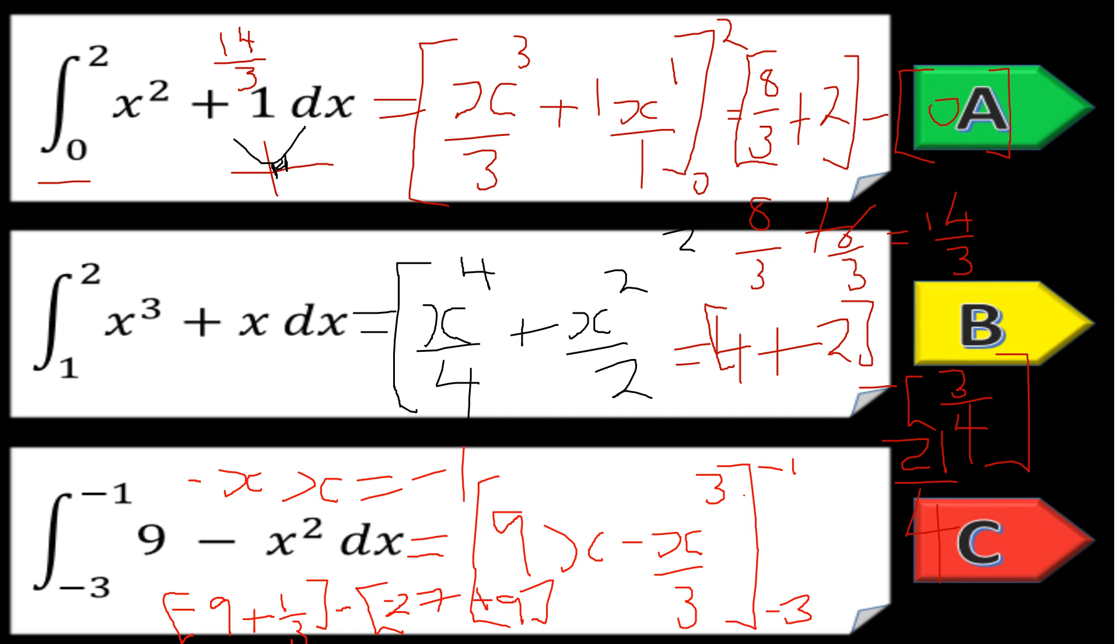If we plug this into our calculator, we've got minus nine plus one third, then we're going to have minus minus sixteen, so plus sixteen. That'll be twenty-two thirds.